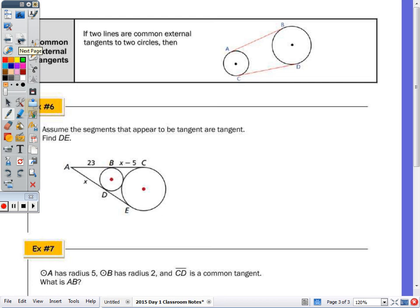Common external tangents are tangent lines on the outside of two circles. If they're common external tangents, they are congruent, so length AB equals length CD. Number 6: assume the segments that appear to be tangent are tangent. Find length DE.